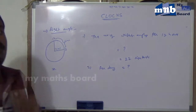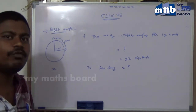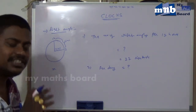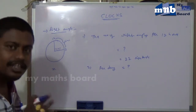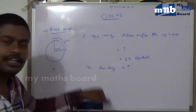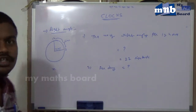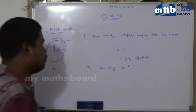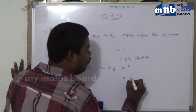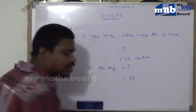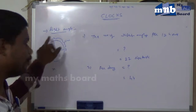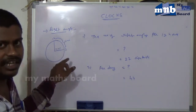Per day means 24 hours, so 24 into 2 is 48, but that is not correct. In 12 hours there are 22, and again in the next 12 hours there are 22, so per day there are 44 right angle positions, because in a day there are two complete rotations of the clock hands.